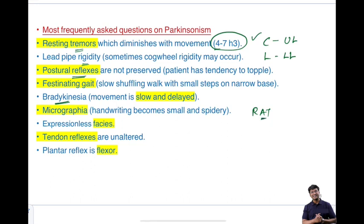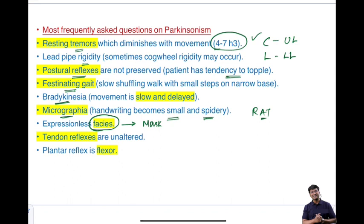Postural reflexes are not preserved in Parkinson's disease, so patients have a tendency to topple and display festinating gait. Micrographia — small, spidery handwriting — and mask-like, expressionless faces are characteristic features. Parkinsonism is a disorder of the extrapyramidal system; the pyramidal tract is not affected, so deep tendon reflexes are unaltered and the plantar reflex remains a flexor response.